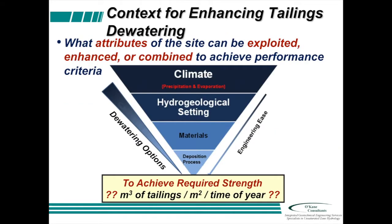What attributes of the site or area can we exploit, enhance, or combine to achieve our performance criteria? What are the big stones — the big things? That's one of the things Lee Barber always talks about. And we like to think of this as a triangle: as we move down the triangle, there's more and more engineering we can apply. We focus on dewatering options as we move from the very big stone, which is climate. Climate is something we just have to take — it's what's there, we can't do anything about it.